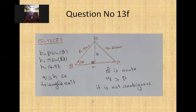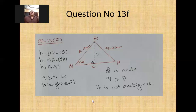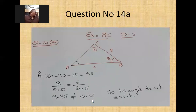To summarize: for an ambiguous case, you need two sides and an angle where the angle is non-included, that angle is acute, and the side opposite to that angle is less than the other given side. Only then can two triangles be formed, making it an ambiguous case.